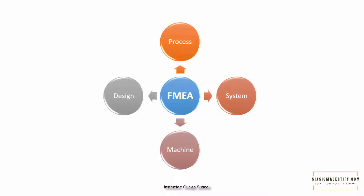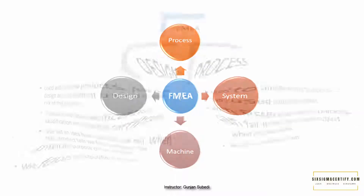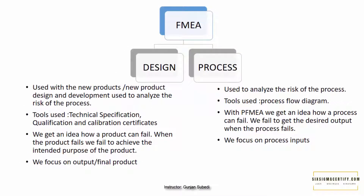With FMEA, we learn what wrong thing can happen to our product or our process. Two types of FMEA are most important in this aspect: Design FMEA and Process FMEA. These two terms are widely confused, so let's see the common differences between them.